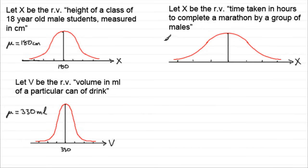And let's suppose for this example, the mean mu was say 3.8 hours. Then this would be 3.8.